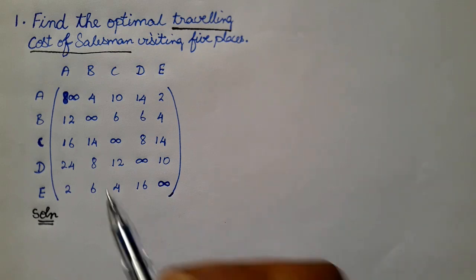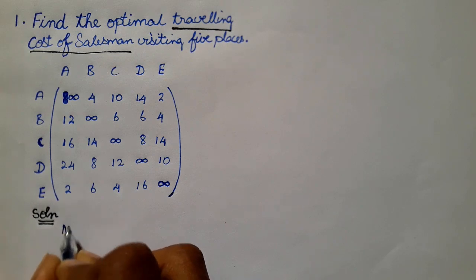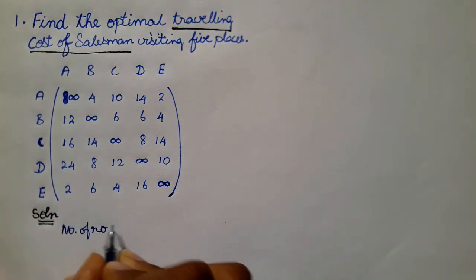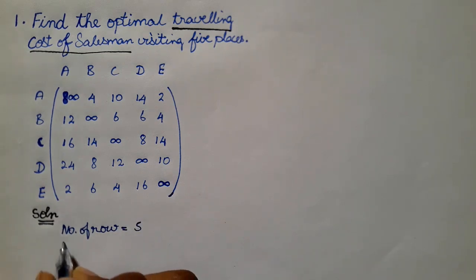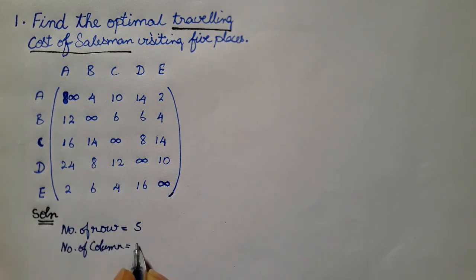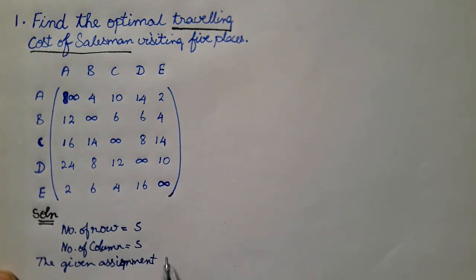First, let's see how the sum is balanced and unbalanced. Here the number of rows is 5 and the number of columns is also 5. So the given assignment is balanced.